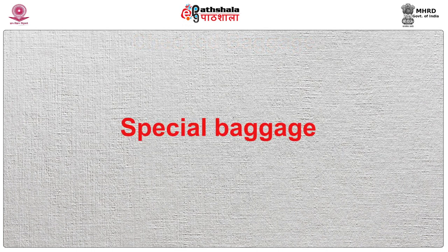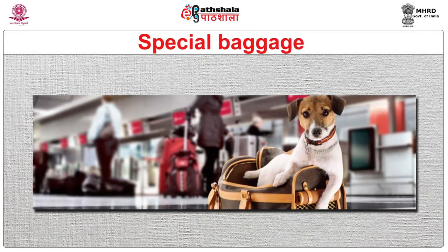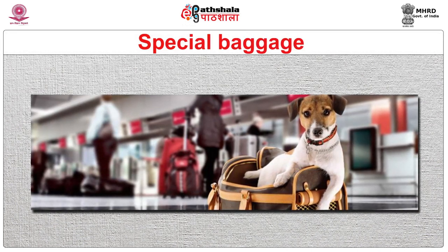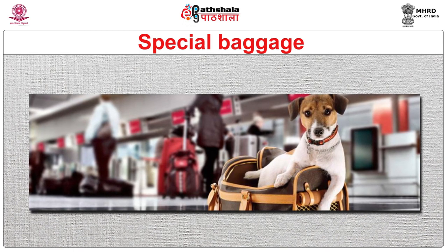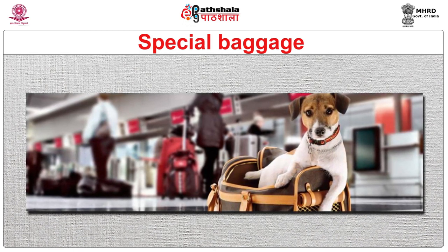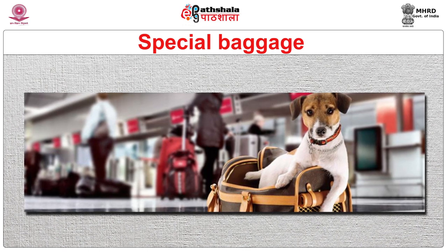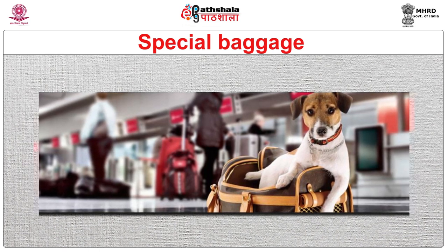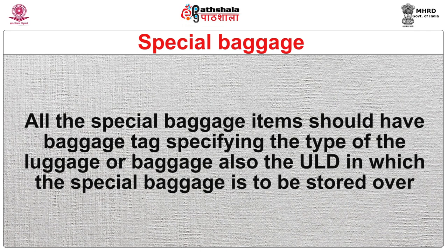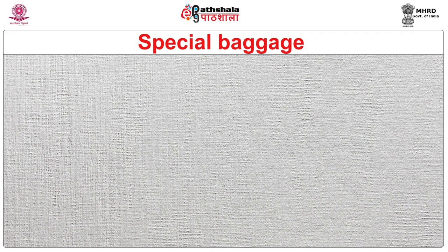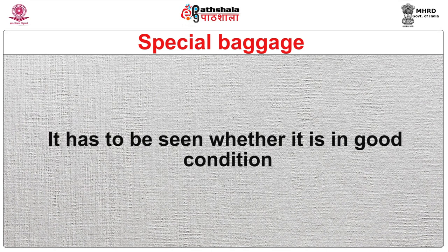Special baggage includes bulky and oversized baggage, cabin seat baggage, crew baggage, sporting equipment, wheelchairs and mobility aids, and pets. All special baggage items should have a baggage tag specifying the type of luggage. The ULD (unit load device) in which the special baggage is to be stored must be checked to ensure it is in good condition.